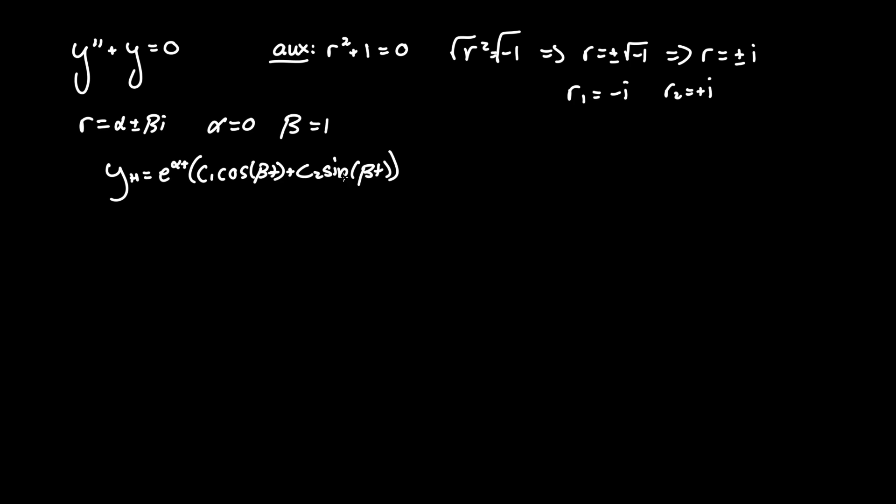c1 and c2 allow for infinite solutions and we can see in this situation that e to the alpha t is equivalent to e to the zero times t which is e to the zero and that equals one as any number to the power of zero equals one. So this converts to one so we can just get rid of this factor here so y homogeneous equals c1 cosine t plus c2 sine t.